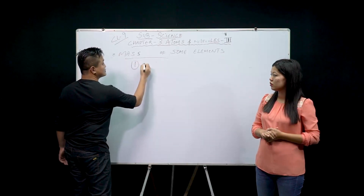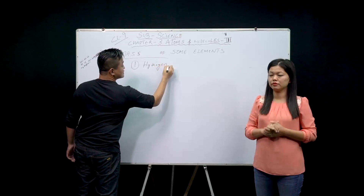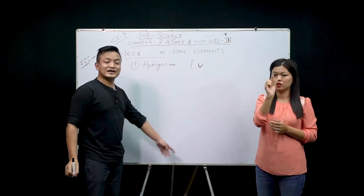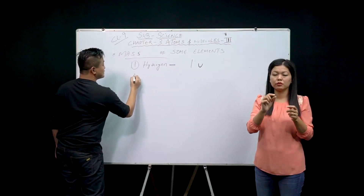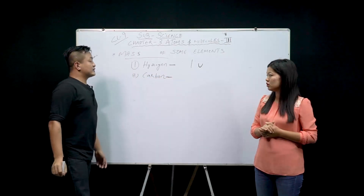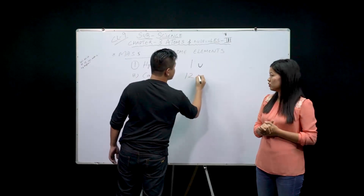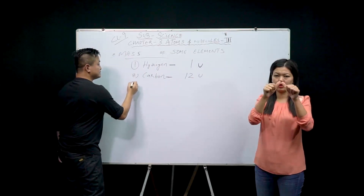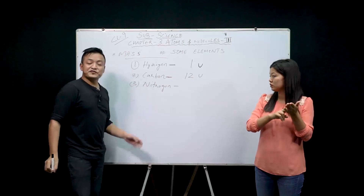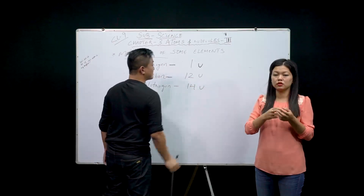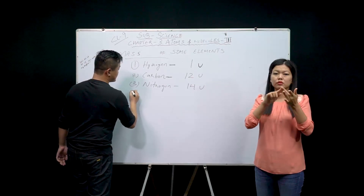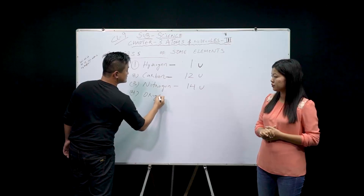The first element is hydrogen. For hydrogen, the atomic mass is 1 u — u means atomic mass unit. Second is carbon; the atomic mass is 12 u. Third is nitrogen; it is 14 u. Students, we have to remember that whatever I'm writing here is a relative atomic mass.